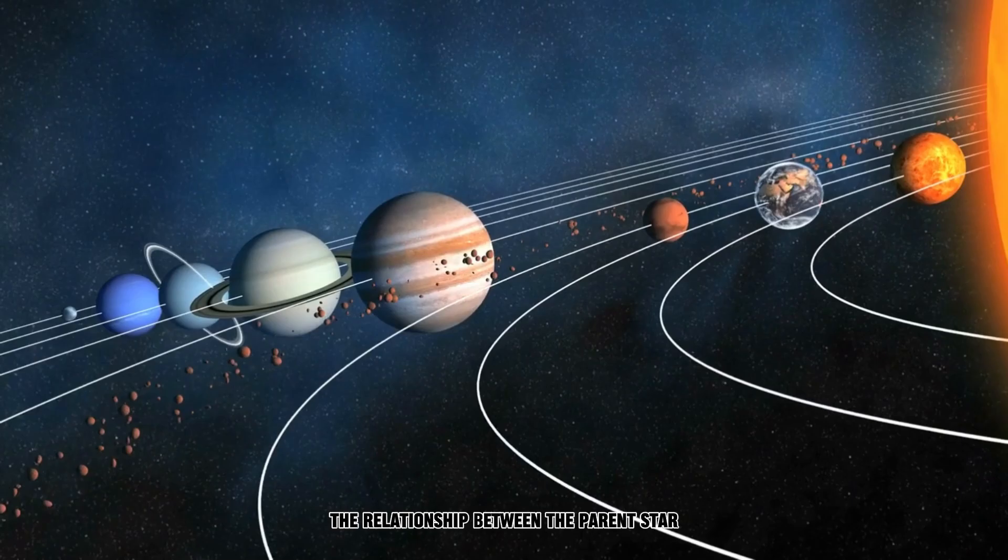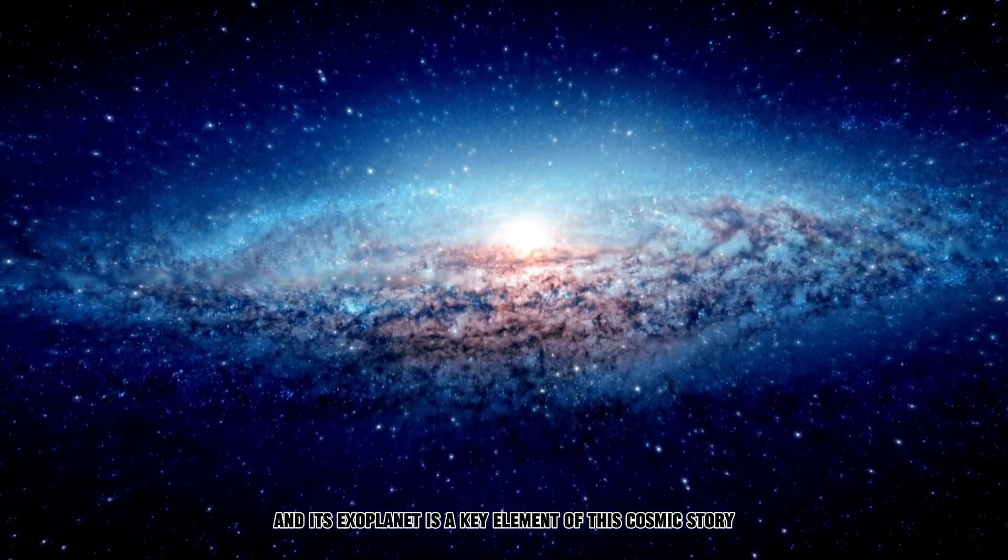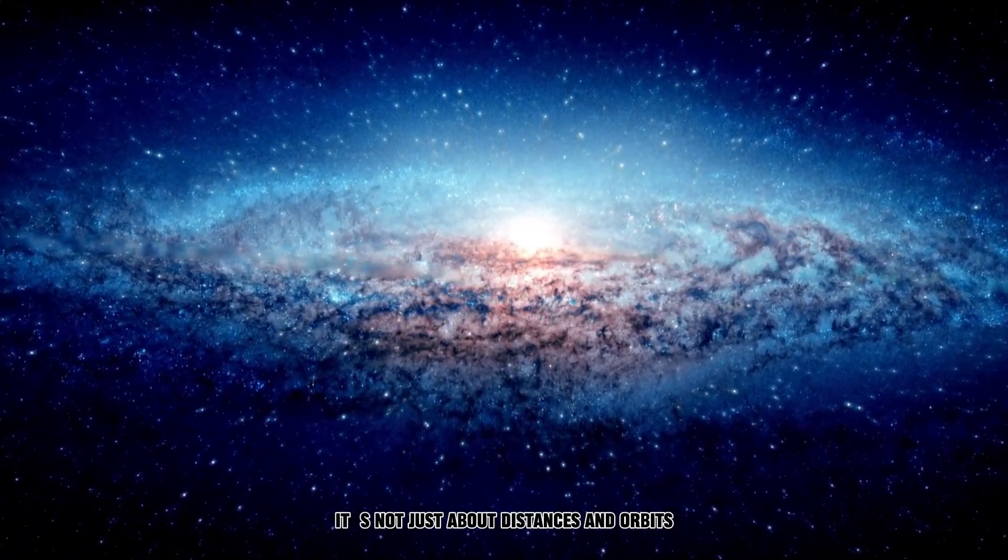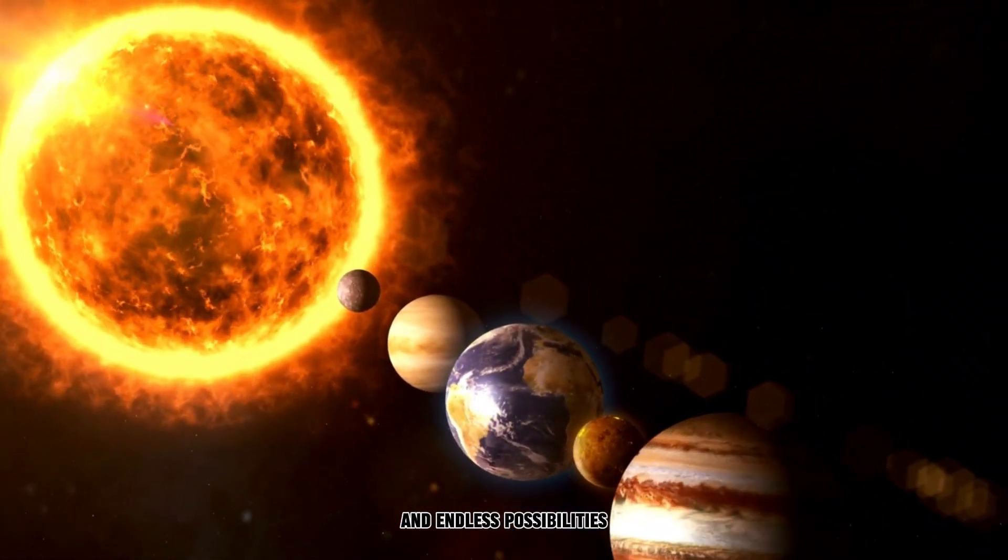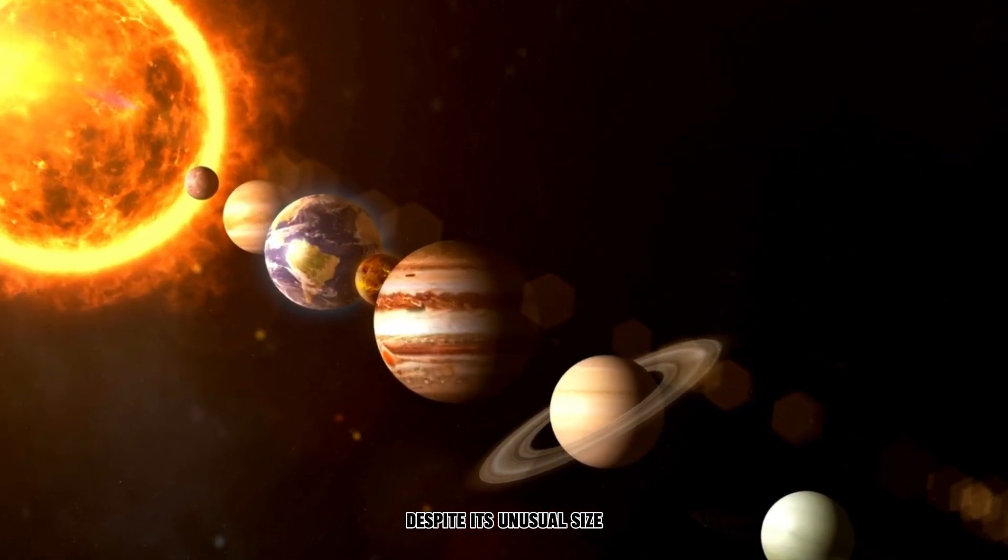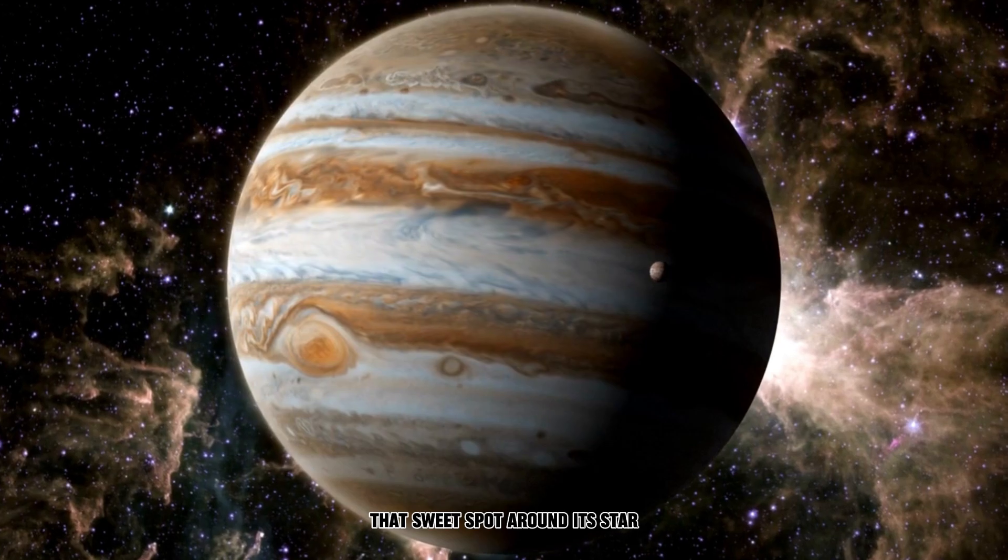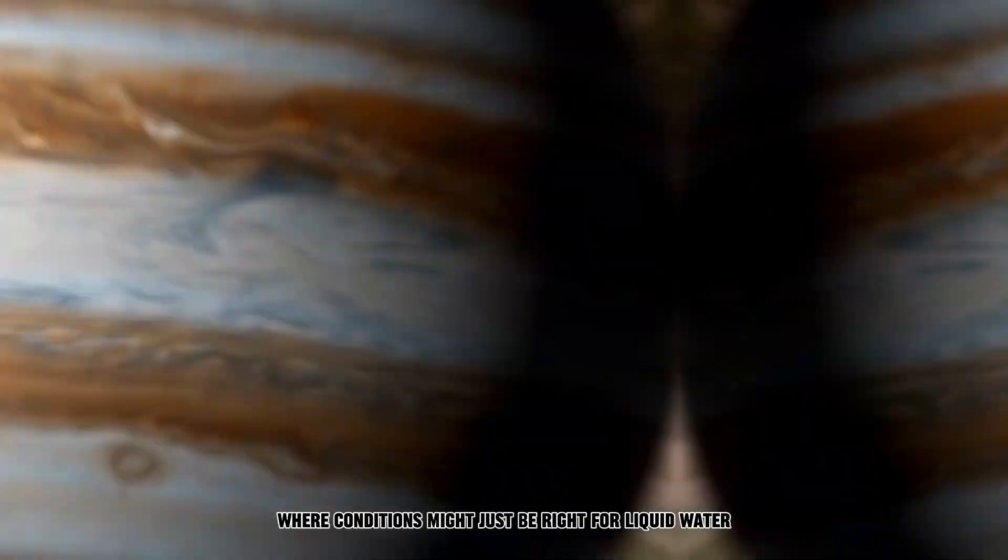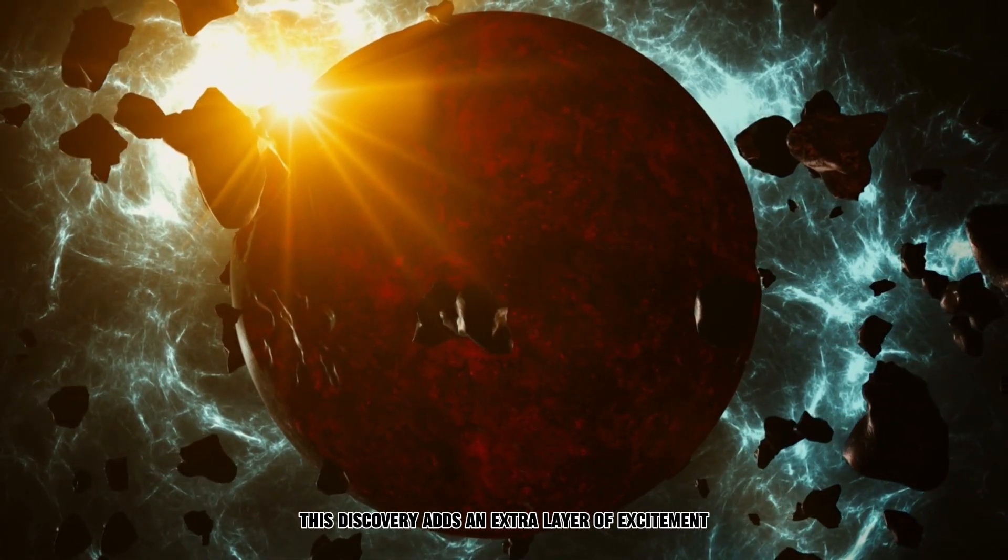The relationship between the parent star and its exoplanet is a key element of this cosmic story. It's not just about distances and orbits. It's about atmospheres, potential life, and endless possibilities. K2-18, despite its unusual size, finds itself within the habitable zone, that sweet spot around its star where conditions might just be right for liquid water. This discovery adds an extra layer of excitement.